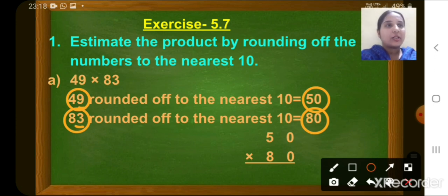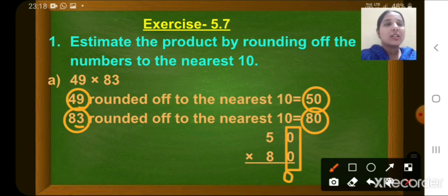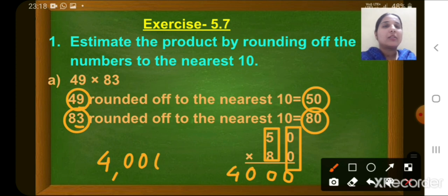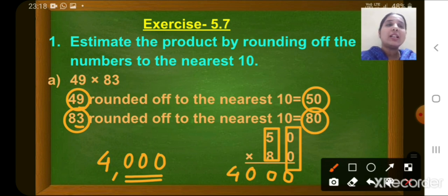Now we have to find the product. We will multiply 50 by 80. There you can see the number of zeros — 2 zeros are there. So first we will write these 2 zeros, and then we will multiply the remaining digits, which are 5 and 8. 5 eights are 40. So the estimated product will be 4000. We rounded off the numbers to nearest 10 and then multiplied to get the estimated product.